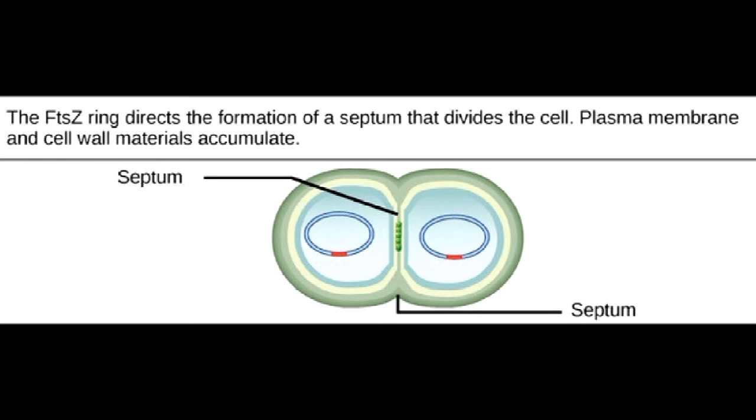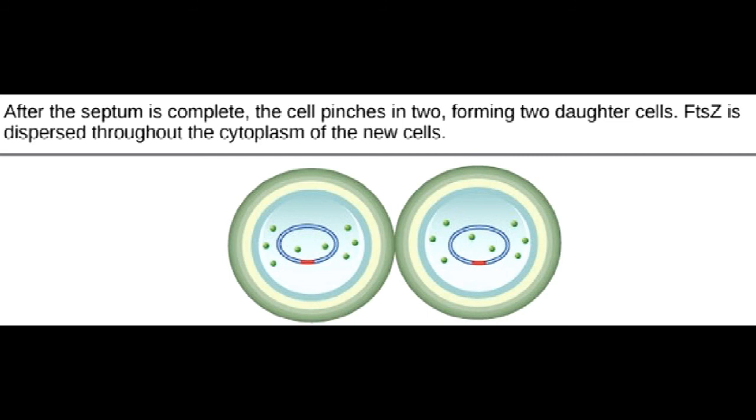Formation of the FTSZ ring triggers the accumulation of other proteins that work together to recruit new membrane and cell wall materials to the site. A septum is formed between the nucleoids, extending gradually from the periphery toward the center of the cell. When the new cell walls are in place, the daughter cells separate.